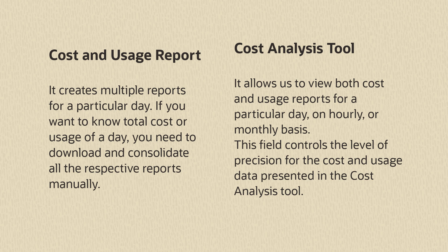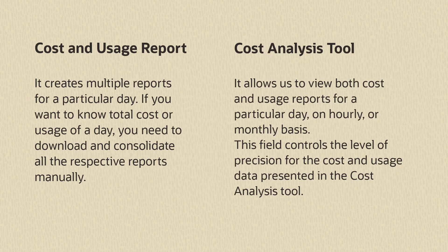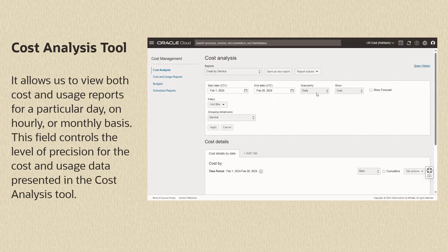The difference between the cost and usage reports and the cost analysis tool is that the cost and usage reports show multiple reports for a particular day. If you want to know the total cost or usage of a day, you need to download and consolidate all the respective reports manually, whereas you can get the usage report of a day easily by using the cost analysis tool. The cost analysis tool allows us to view both cost and usage reports for a particular day on an hourly or monthly basis.